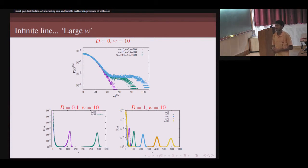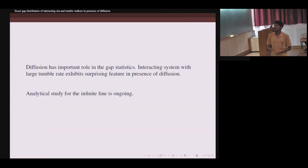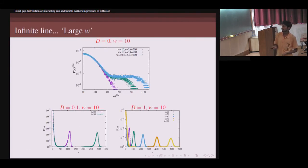We don't actually, so far, have any theoretical understanding of why this is happening. One interesting thing is that we expect that as the tumble rate increases, the particle should be more like a passive particle. So as W increases, the particle should be more passive. But it is obviously not so, at least in presence of interaction. So the main theme is diffusion has some important role in the particle gap statistics, and when there is very high tumble rate, some very non-trivial feature is observed. At present we are trying to understand analytically whether this could be explained.